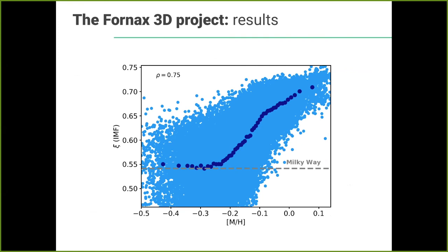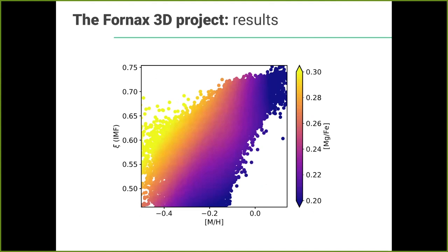Taking all the data points together — a few thousand per galaxy — we recover the relation between metallicity and the IMF across the F3D survey. There is a nice correlation: more metal-rich regions tend to have an enhanced fraction of low mass stars, and when you go to low metallicity you recover a Milky Way-like IMF. We also found some secondary correlations in the low-metallicity regime, suggesting that at fixed metallicity, regions with higher alpha abundance tend to exhibit a steeper IMF with more low mass stars.